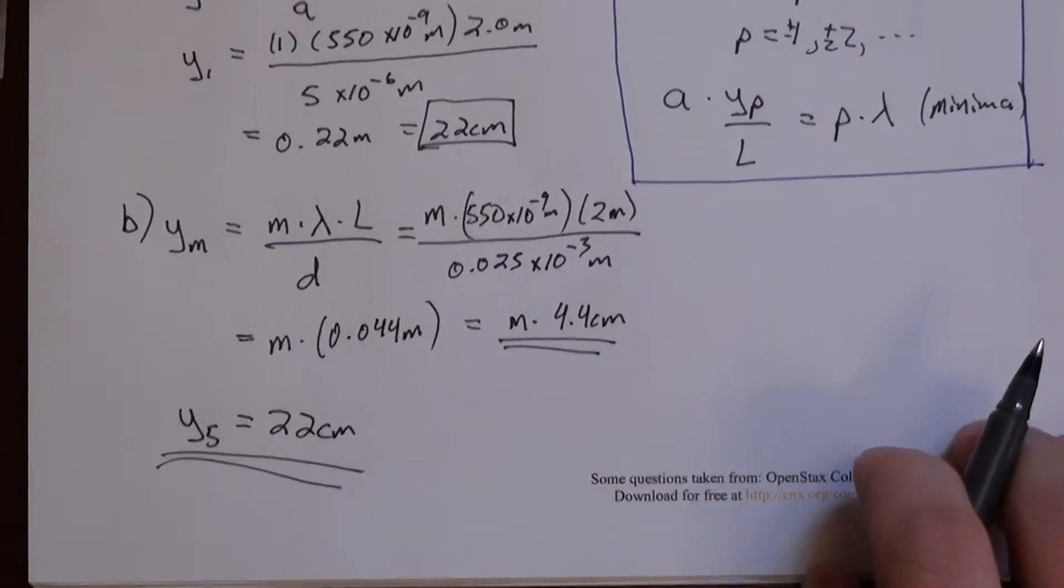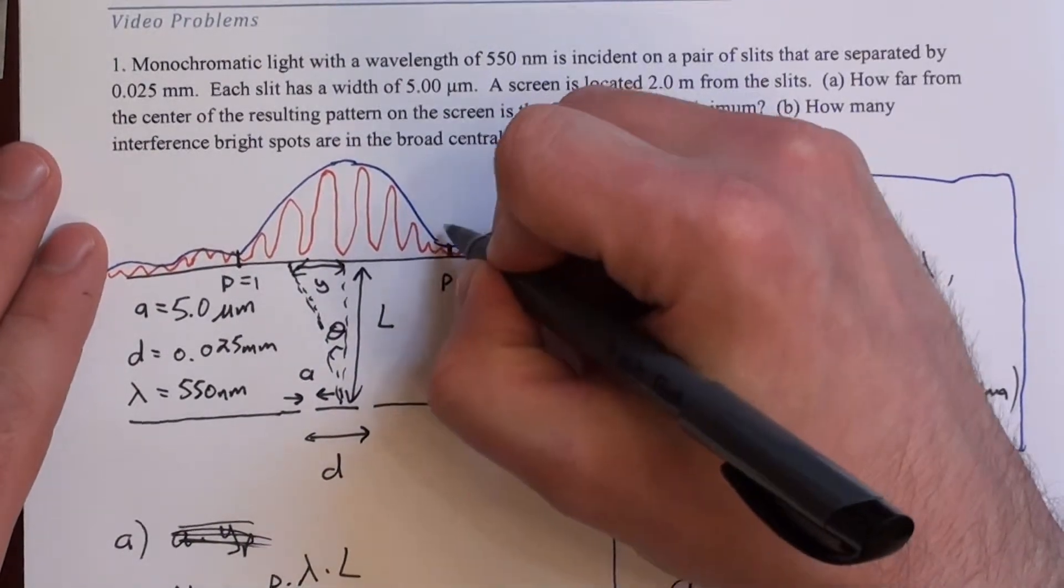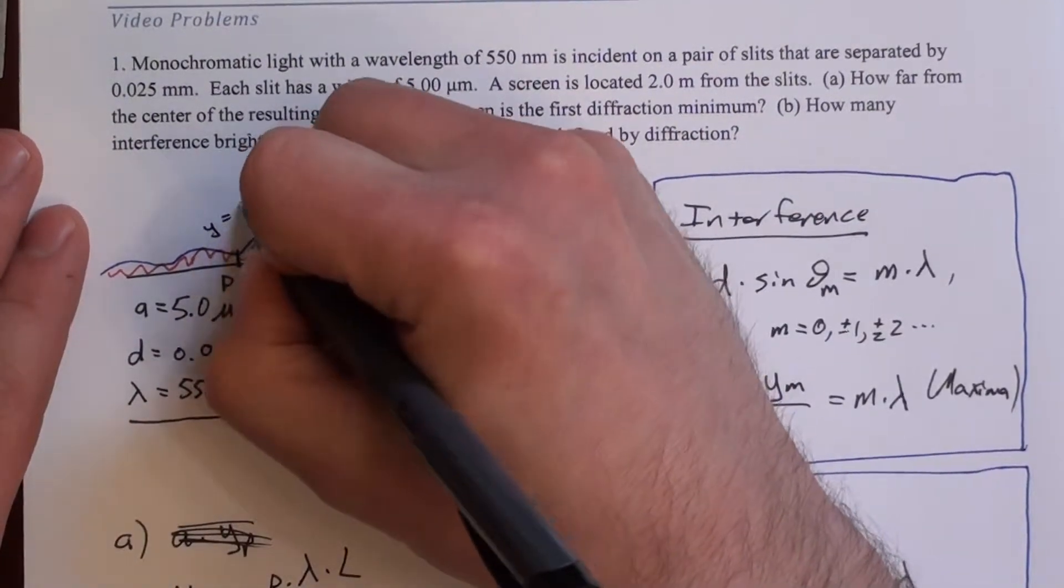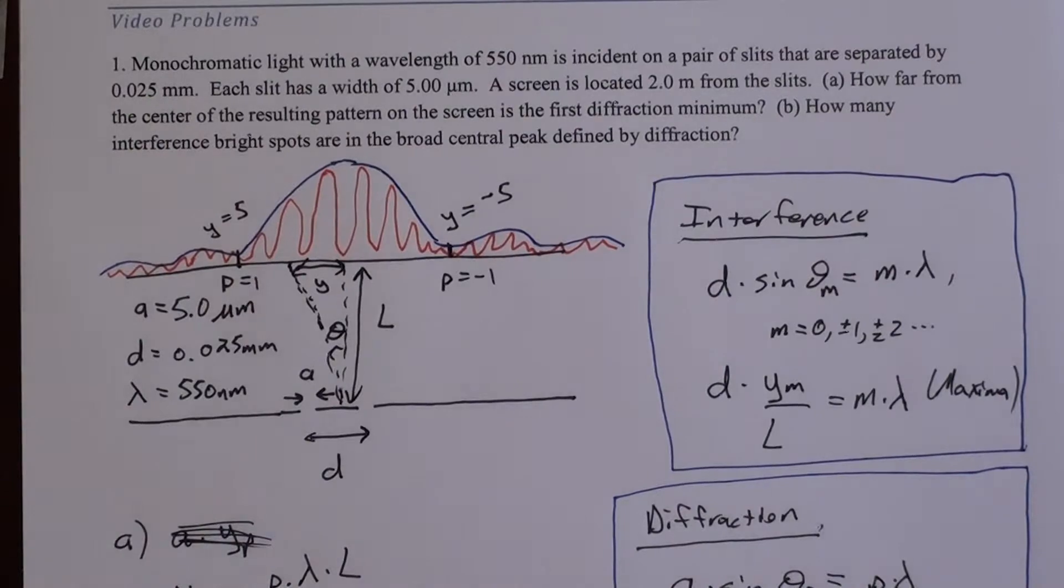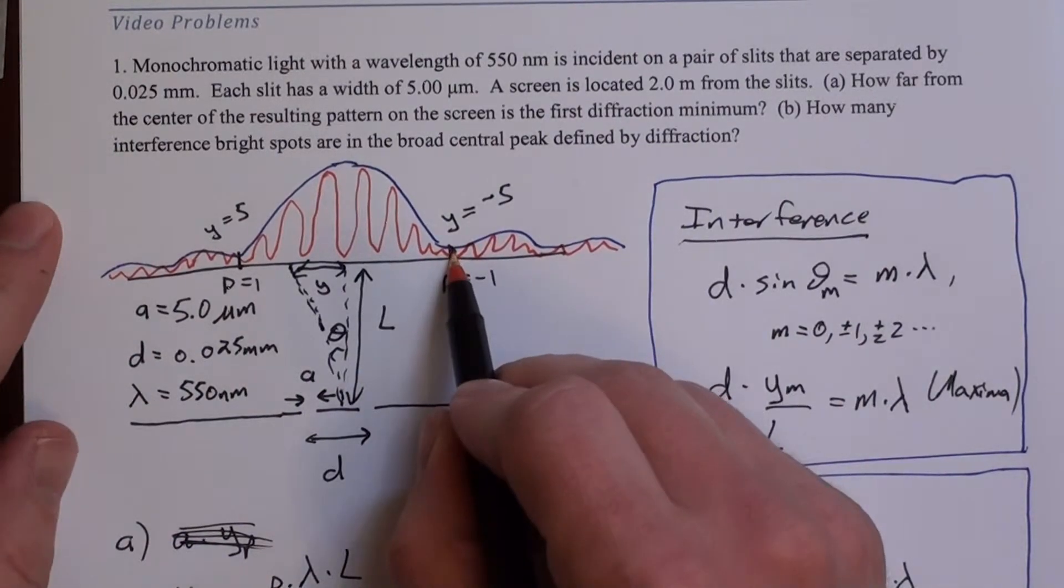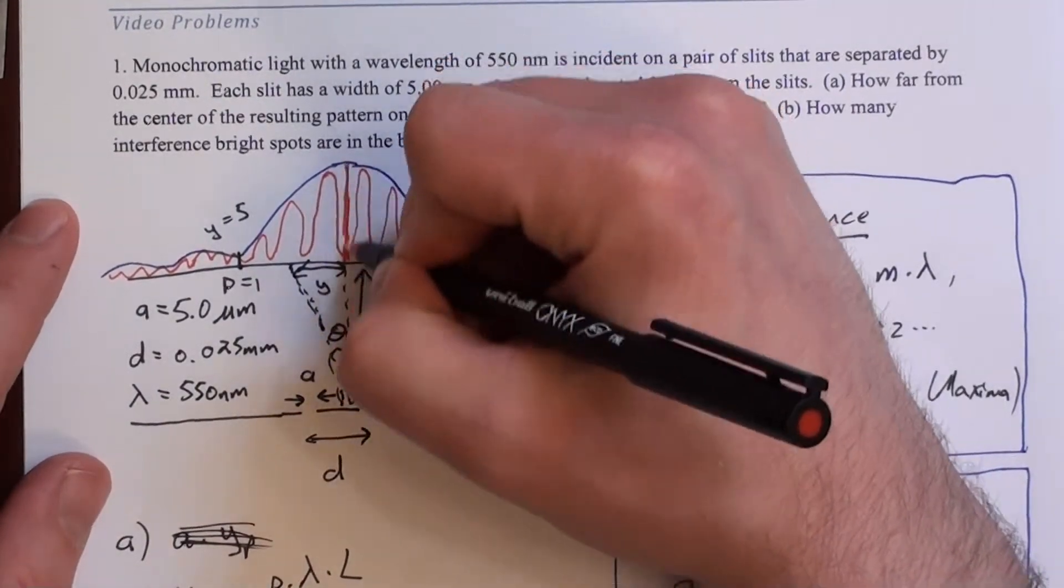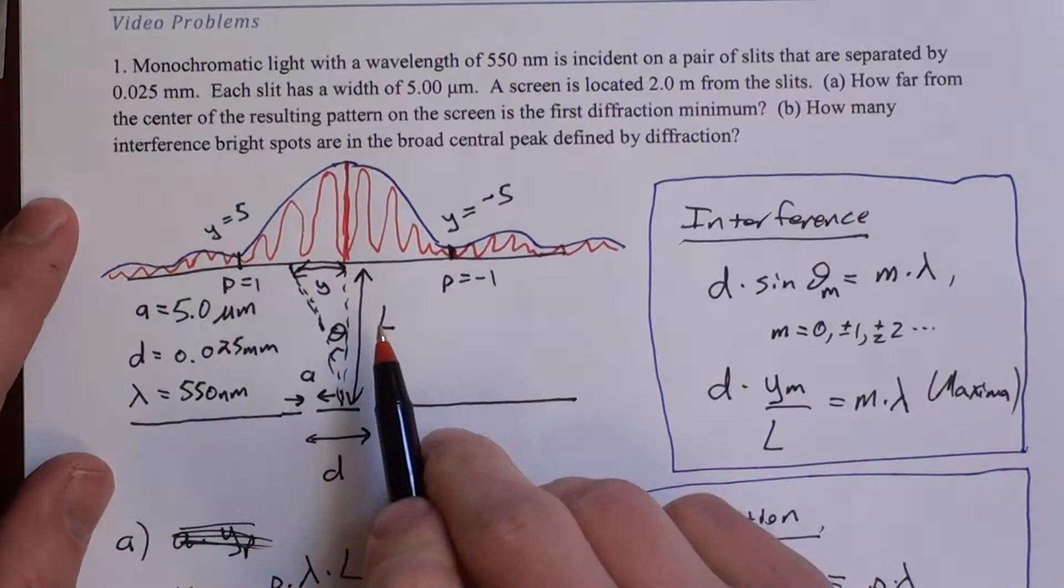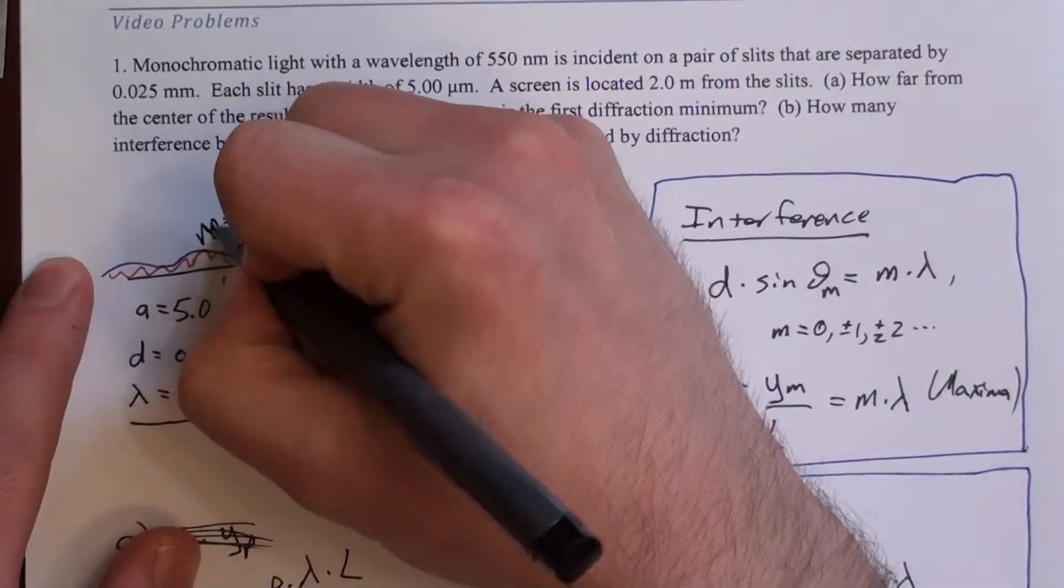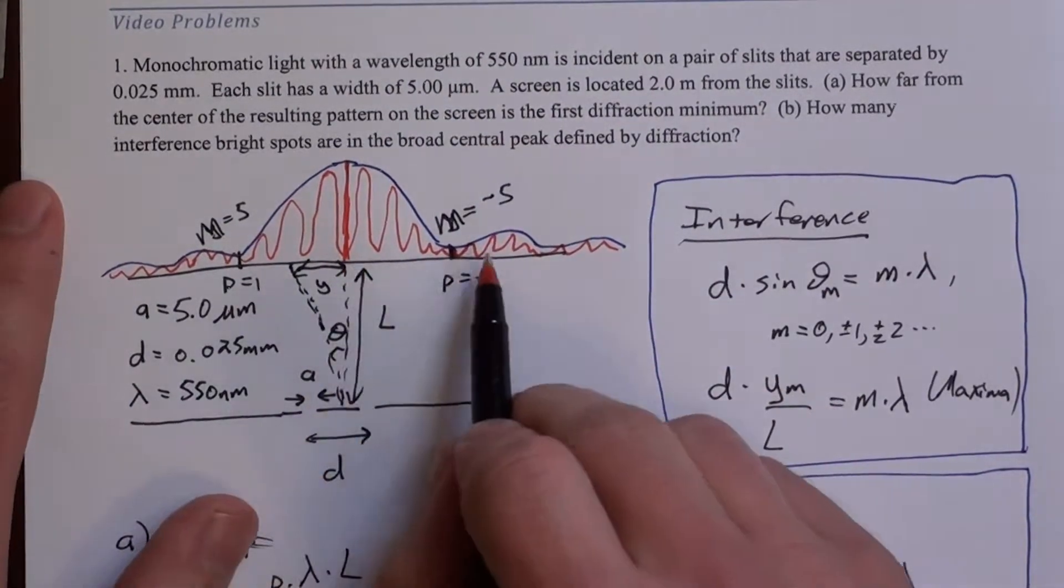So that means Y equals 5 falls exactly where P equals 1 does. So if I label that here, this point is M equals minus 5, and this point is M equals positive 5. So what that means is that I have a bright spot from interference exactly overlaying this dark spot from diffraction. So you wouldn't actually see it, because the dark one wins. But we have a central peak, M equals 0 is the center, and then M equals 5 is over here, and M equals minus 5 are over here.